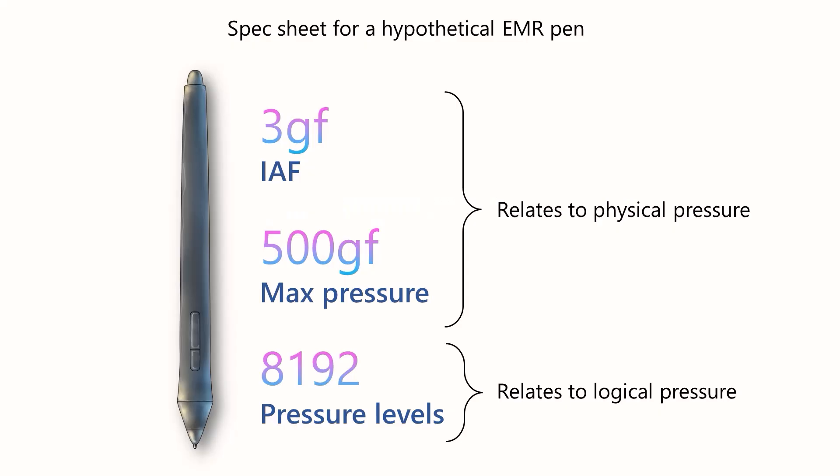Here is a spec sheet for a hypothetical EMR pen. There are three specifications here: an initial activation force of 3 gram force, a maximum pressure of 500 gram force, and the number of pressure levels, 8,192.